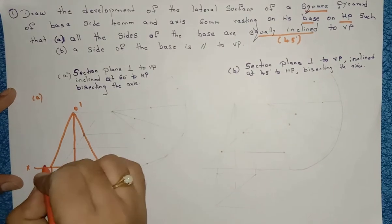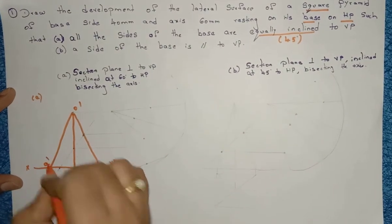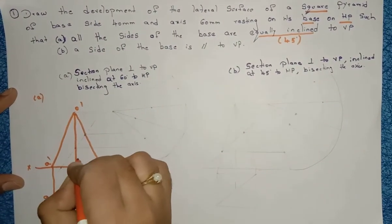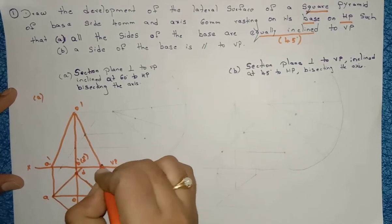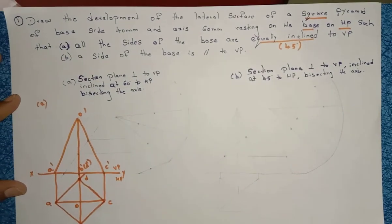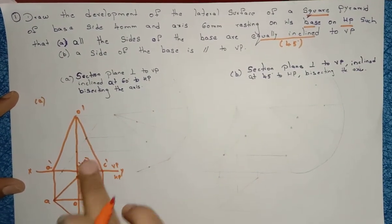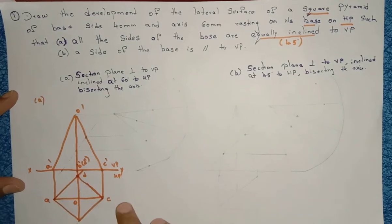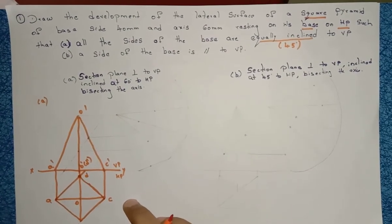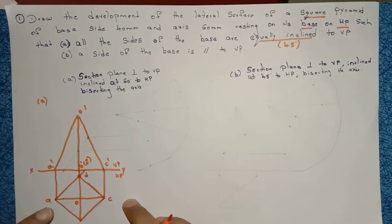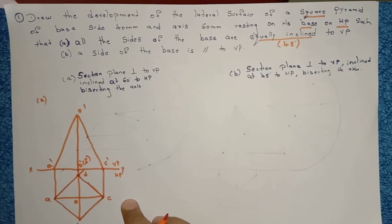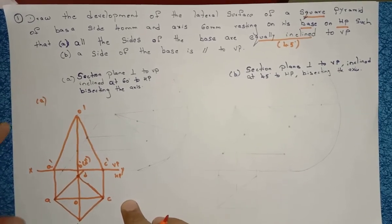The point names in the front view are: A dash, B dash or D dash, and C dash. This completes the first part — we now have the front and top views of the square pyramid.